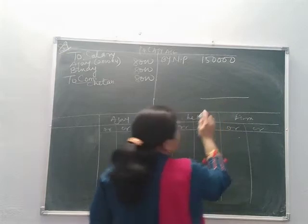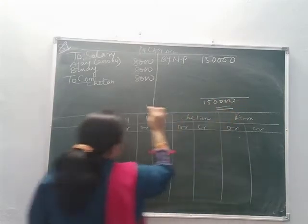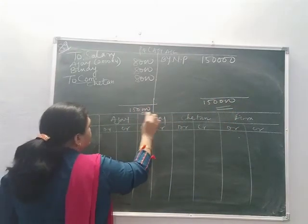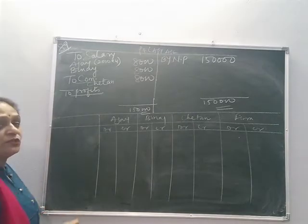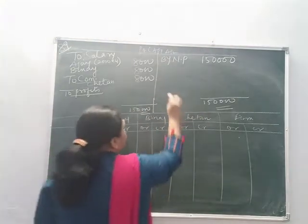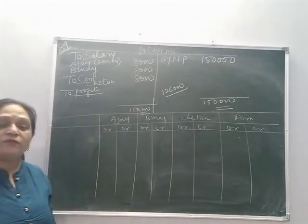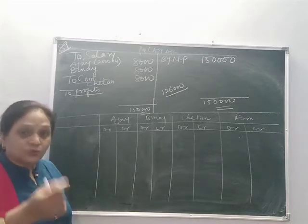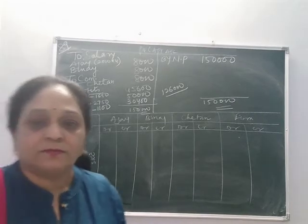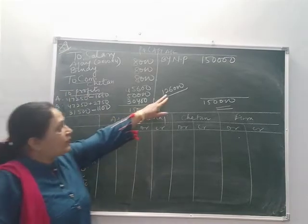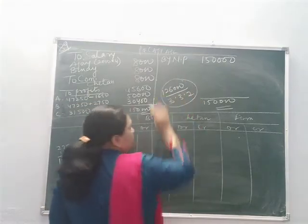After deducting salary 16,000 and commission 8,000 from 1,50,000, the divisible profit is 1,26,000. This 1,26,000 is to be divided in the ratio 3:3:2. The figures come to 47,250 for Ajay, 47,250 for Bhimal and 31,500 for Chetan. This is the distribution in 3:3:2.